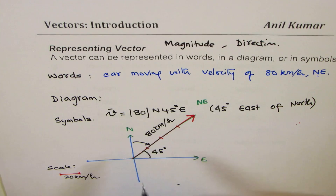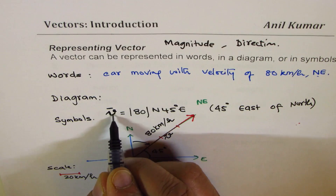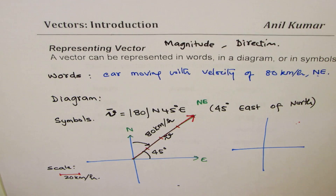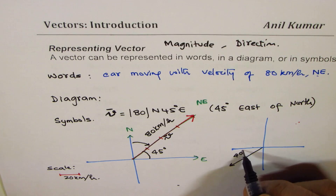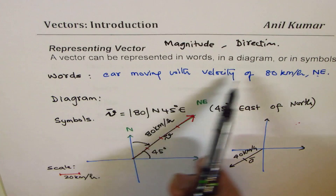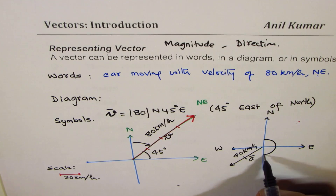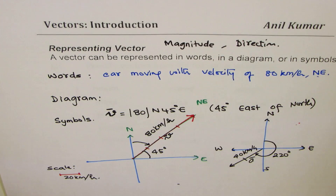In books, a vector is printed in bold. We can write vector V with an arrow on top — that indicates a vector. As an exercise, I'll leave another vector A for you to describe. The direction is at 220 degrees (from the reference), in a scale of 20 km/h that length becomes 40 km/h. You need to represent this vector A in the form of words and symbols.